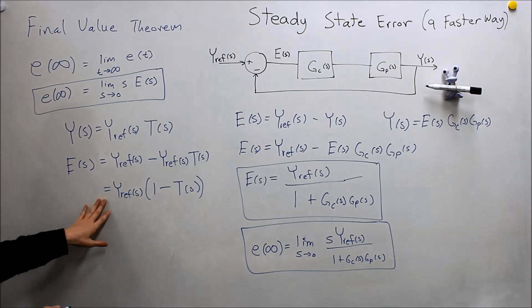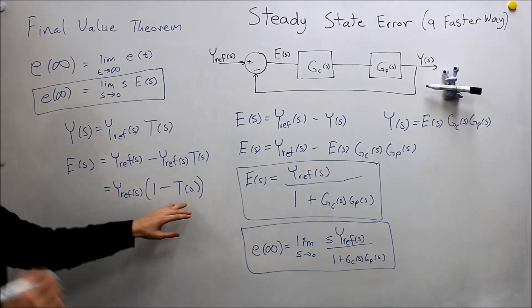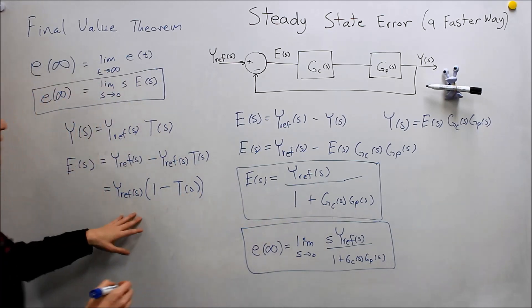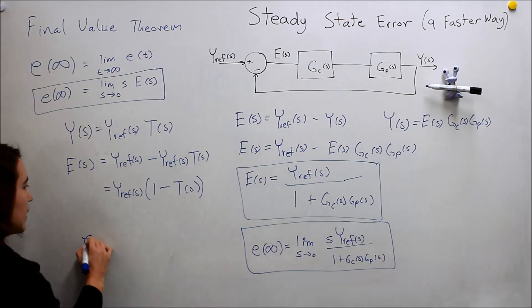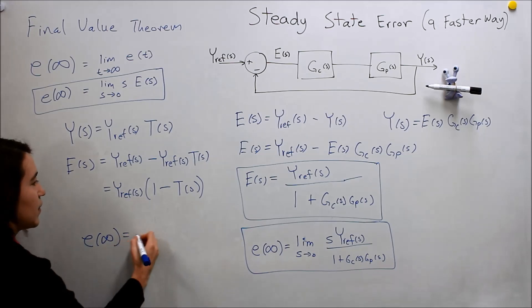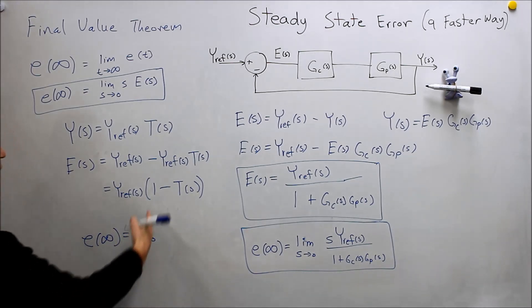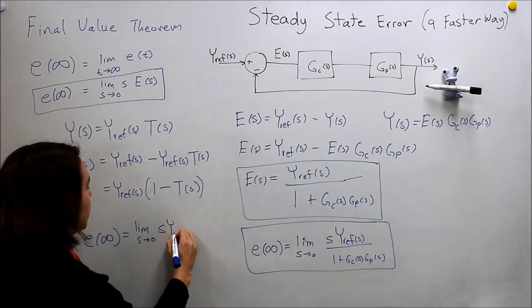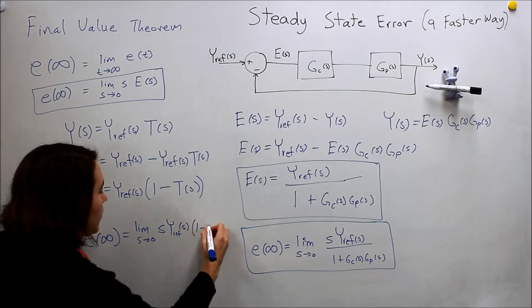So these would be equivalent expressions. They're just depending if you already know t, or if you know gc and gp. And then we would do the same thing here. If we take the e to infinity, it would equal to the limit as s goes to zero of this expression times s. So it would be s y ref of s, 1 minus t of s.